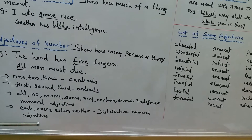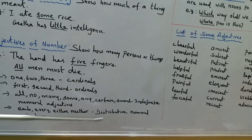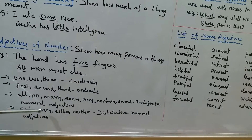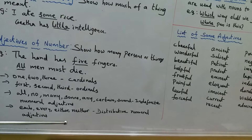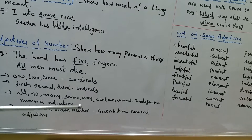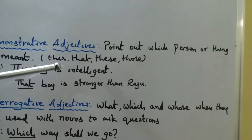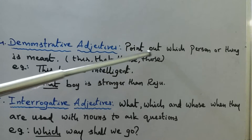Words like each, every, either, and neither are distributed numeral adjectives. So the fourth type of adjective is demonstrative adjectives. They point out which person or thing is meant.